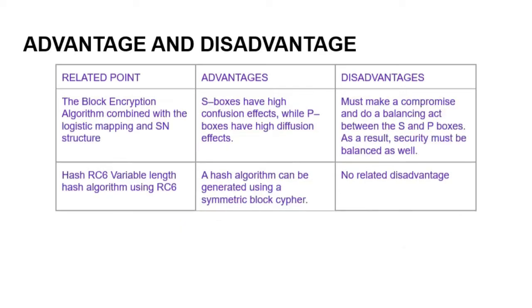The next point is the block encryption algorithm combined with the logistic mapping and SPN structure. For the advantage, S-box has high confusion effect while the P-box has the high diffusion effects. For the disadvantage, it must make a compromise and do a balancing act between the S and P-box. As a result, security must be balanced as well.